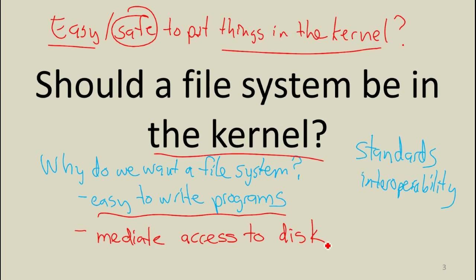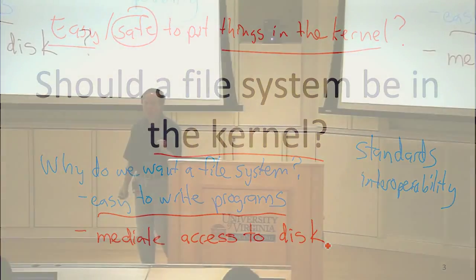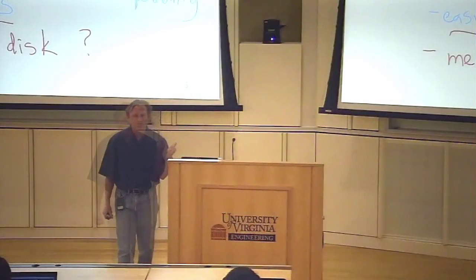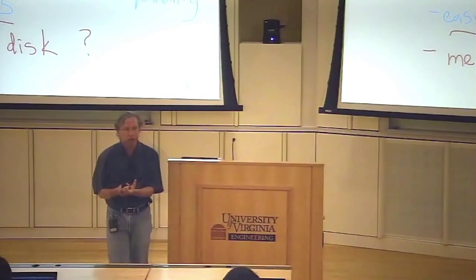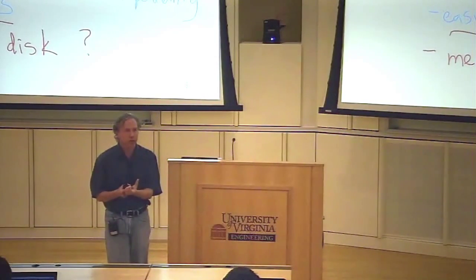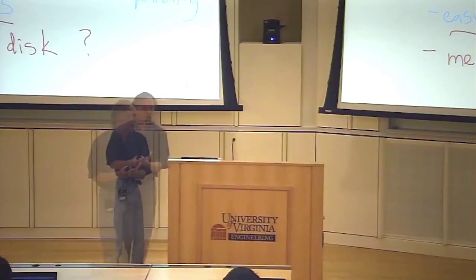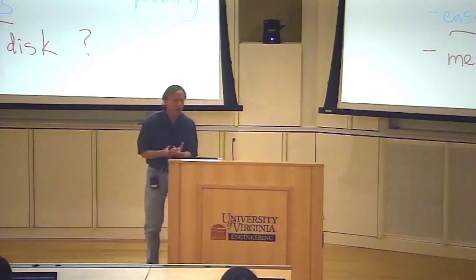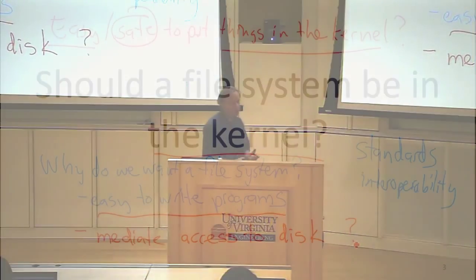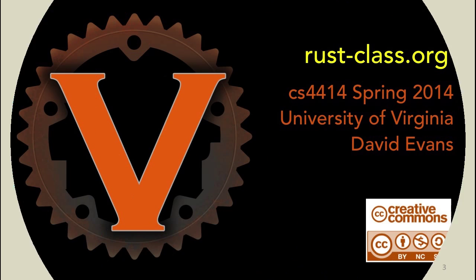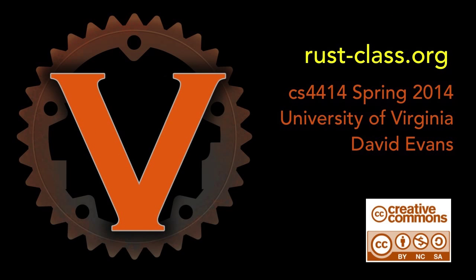But maybe that's not a good enough reason. Most of what you're doing in a file system seems like it doesn't depend on being in the kernel — you're not using a lot of privileged instructions. Maybe there are only a couple of places where your access to this resource depends on a privileged instruction, and that's why it needs to be in the kernel.